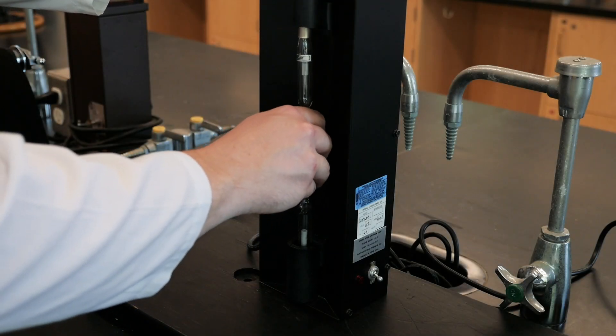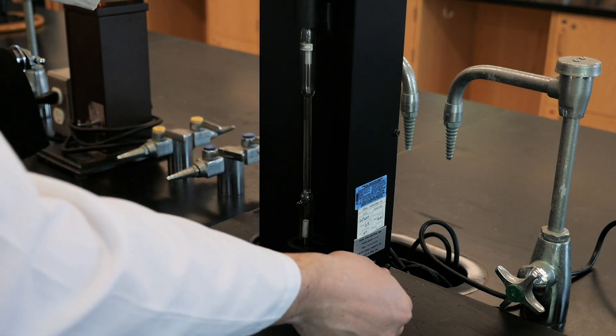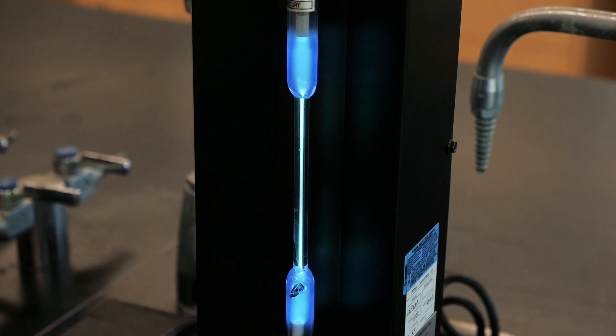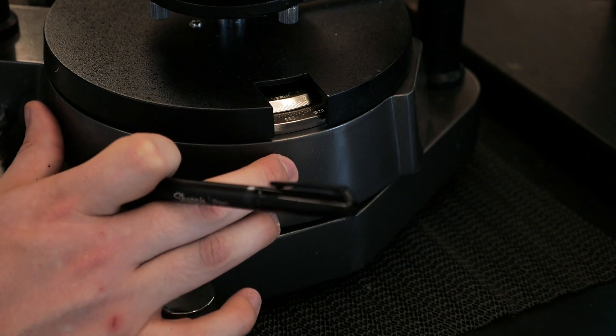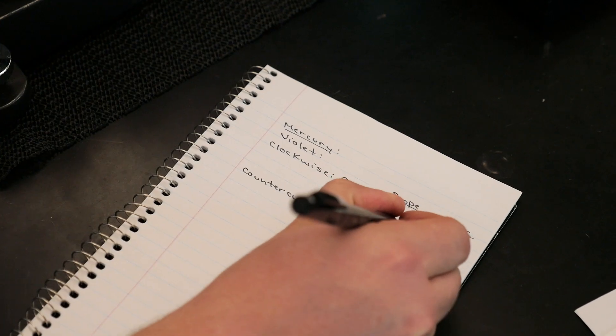Next, try the mercury discharge tube, and you'll again notice three spectral lines. In exactly the same manner as before, calculate and report the wavelengths observed for each of the three lines.